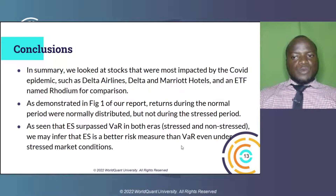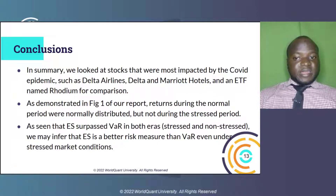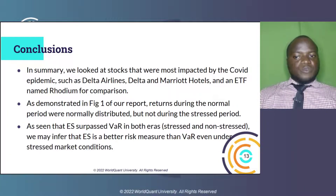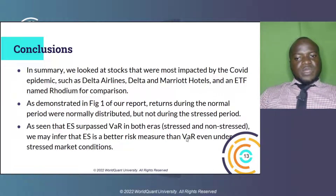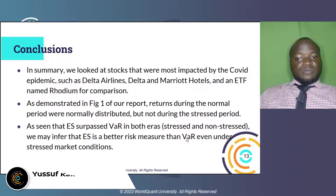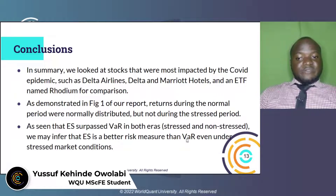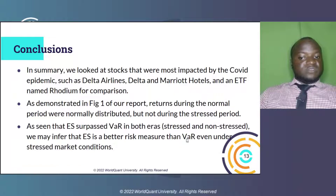Conclusion. In summary, we analyzed the securities most affected during the COVID pandemic era, such as those in the airline business — as travel was restricted — like Delta Airlines, those in the hotel and tourism business like Hilton and Marriott hotels, and we also picked an exchange-traded fund (ETF) called Rhodium for comparison. From our analysis, it can be seen that during the normal period, returns were normally distributed as shown in Figure 1 in our report, while during the stress period they were not. We can see that ES outperformed VaR for both periods — stress and non-stress. Therefore, we can conclude that ES is a superior risk measure to VaR, even in terms of stress market circumstances, as shown by the backtesting results.